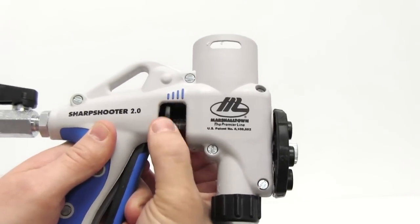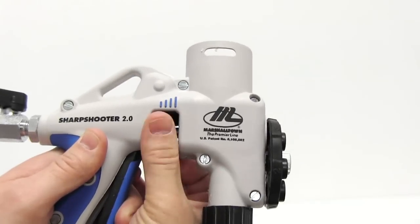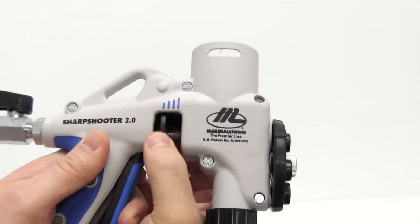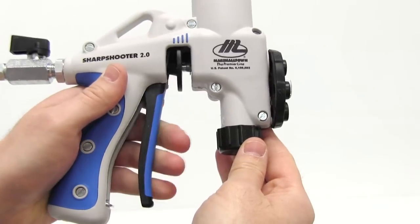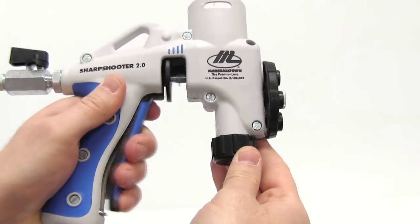The trigger is fitted with a material control knob that allows the user to dial in the desired amount of material while still maintaining a full pull on the trigger. This makes for more consistent texturing.